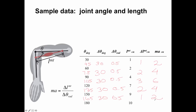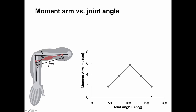So moment arm goes small to big to small, which is pretty common. Moment arms often change with joint angle because the muscle path moves. Here's a very simple, symmetric example with nice numbers. If we re-plot it — moment arm versus joint angle — putting in these values at 45, 75, 105, 135, and 165 degrees, you see that pattern. This is central differences; if you don't remember how to do numerical derivatives, look up 'numerical derivative central differences' — that should explain it and dust off some cobwebs.